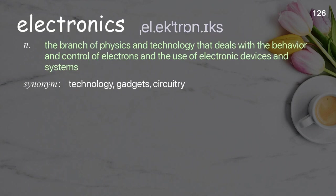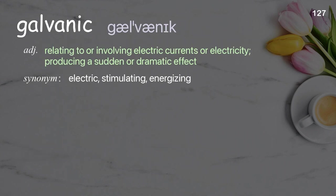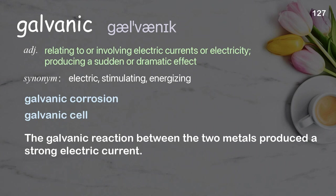Electronics: the branch of physics and technology that deals with the behavior and control of electrons and the use of electronic devices and systems. Examples: electronics industry. The company specializes in manufacturing and selling cutting-edge electronics. Galvanic: relating to or involving electric currents or electricity; producing a sudden or dramatic effect. Examples: galvanic corrosion, galvanic cell. The galvanic reaction between the two metals produced a strong electric current.